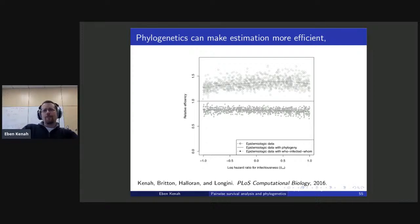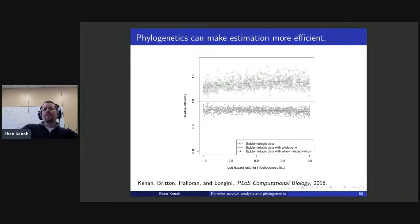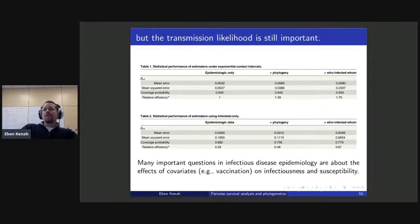Here's an example from a PLOS Computational Biology paper I did with Tom Britton, Betz Halloran, and Ira Longini, where we looked at how phylogenetics by contributing partial information about who infected whom could make estimation more efficient. The circles are the relative efficiency of an analysis using only epidemiologic data on person, place, and time — that's 1.0 — and then the phylogenetic estimates, and below them the epidemiologic data plus exact knowledge of who infected whom.